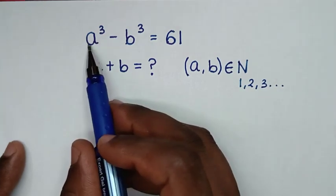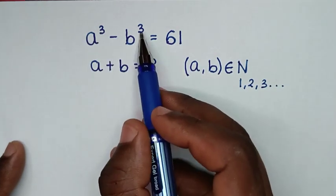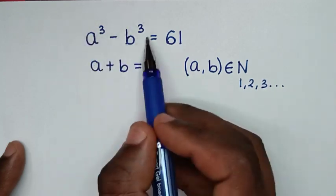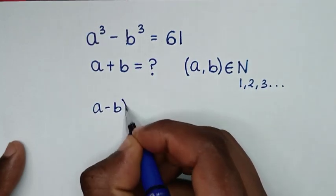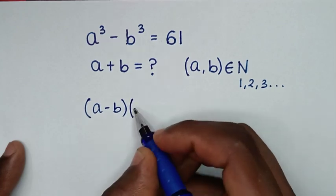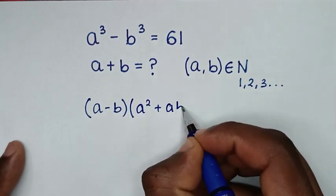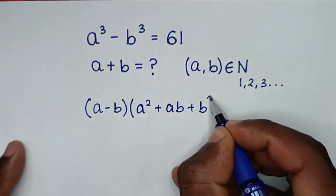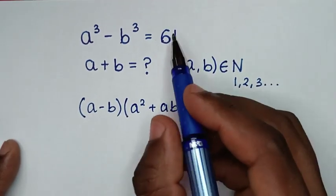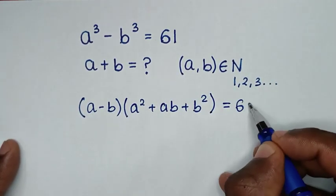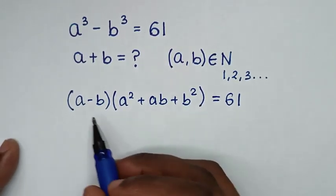To find a plus b from this problem, we use the difference of cubes identity: a³ minus b³ is the same as (a minus b)(a² plus ab plus b²), which equals 61.